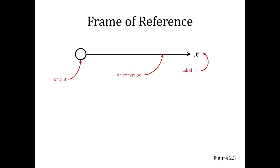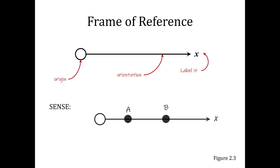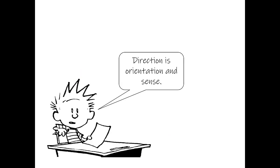And then usually we are going to label it. By convention, usually but not always, the horizontal direction is labeled as the x direction, but it could just as easily be y or z or something else. Next, we have to talk about sense. Even though we have an orientation, we still don't have a full description of the motion. Going from point A to point B would represent one sense, while going from B to A would represent the opposite sense. If we put orientation and sense together, we end up with a direction. And if we have a direction and an origin, we have established our frame of reference.